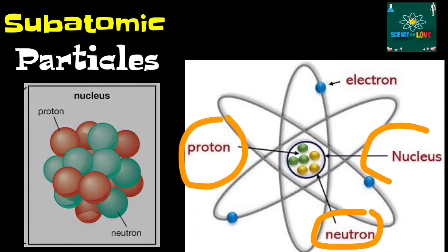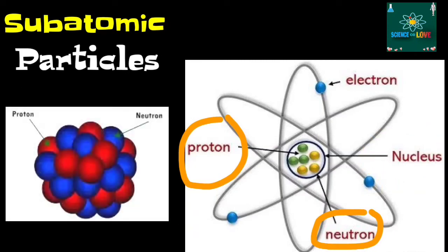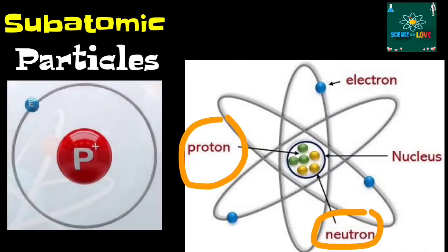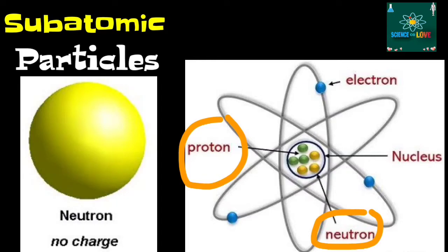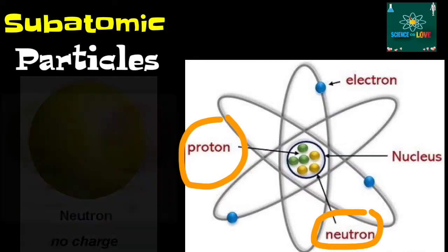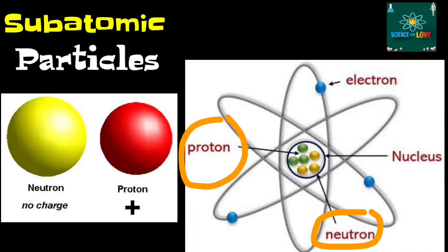The protons and neutrons are both small but massive, and their masses are nearly equal. Well, the proton is positively charged, while the neutron has no charge. Protons and neutrons contribute to the mass of the atom.